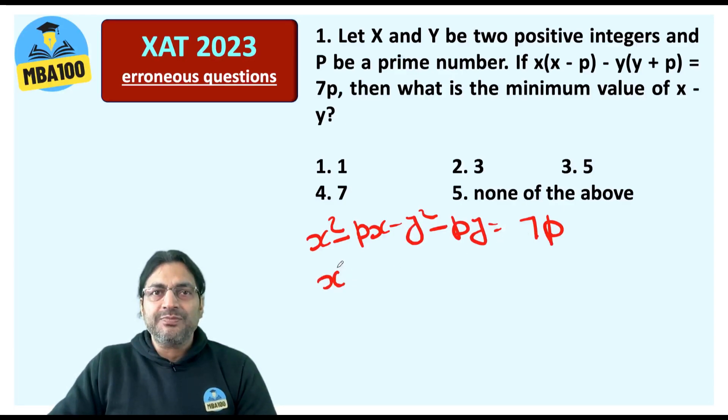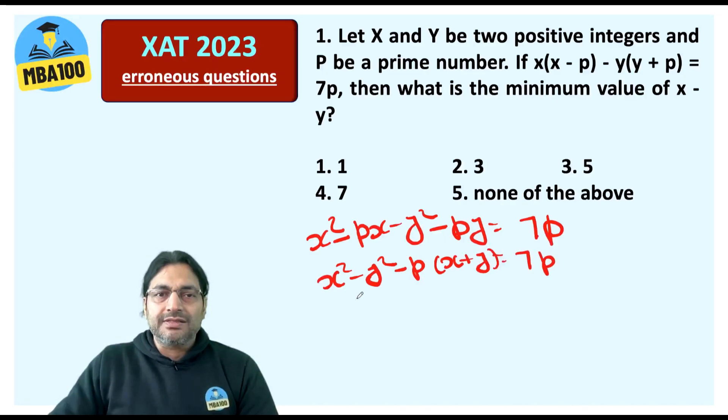So if we rearrange this, this becomes X² - Y² - P(X + Y) and that is equal to 7P. This X² - Y² can be written as (X + Y)(X - Y), minus P(X + Y) equal to 7P.